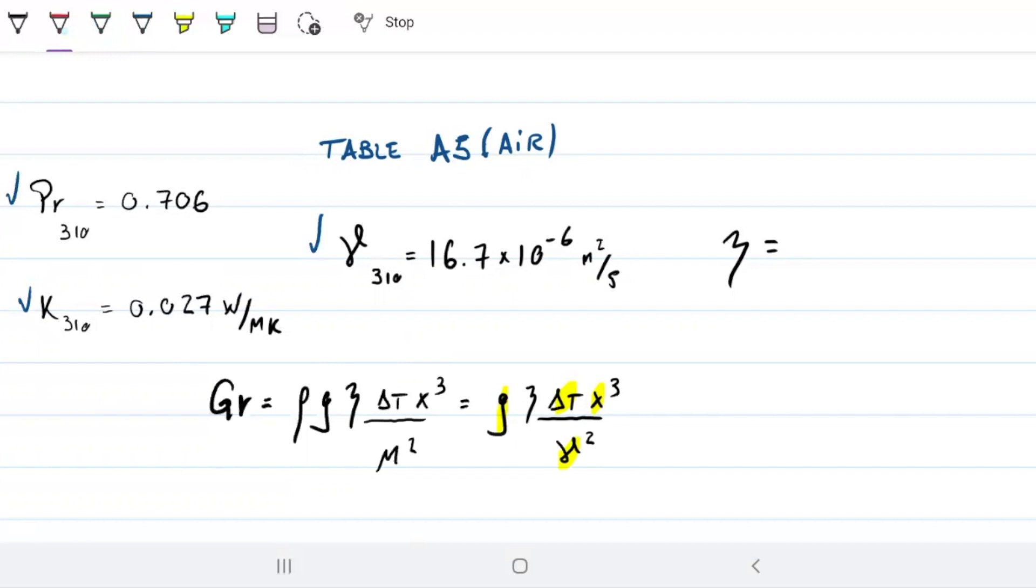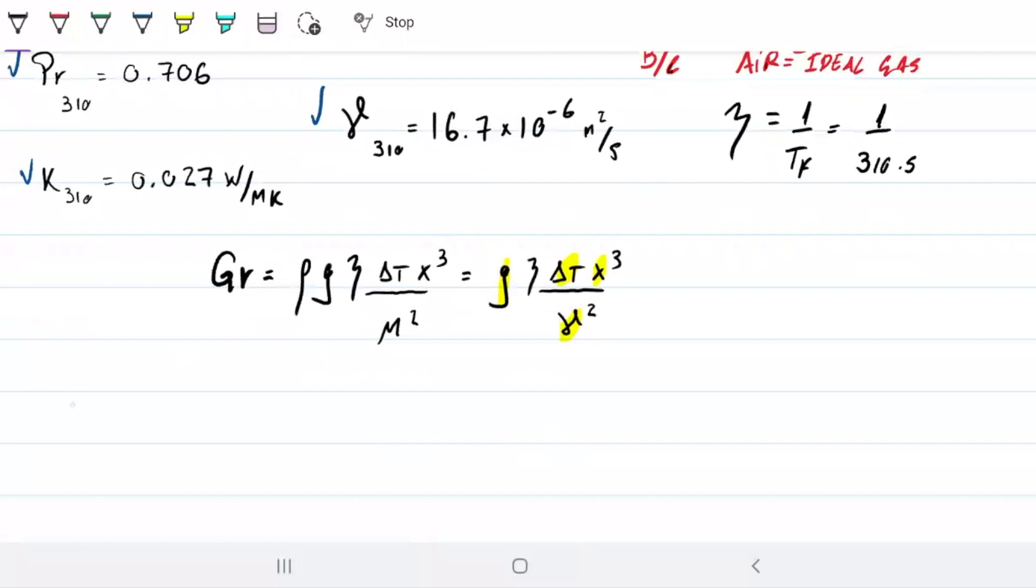We don't know beta, but because air can be approximated to an ideal gas, then I can find beta by doing 1 over T-film, as long as T-film is in Kelvin. So 1 over 310.5 - that's my beta. So I have everything I need to calculate my Grashof, and that's precisely what I'm about to do.